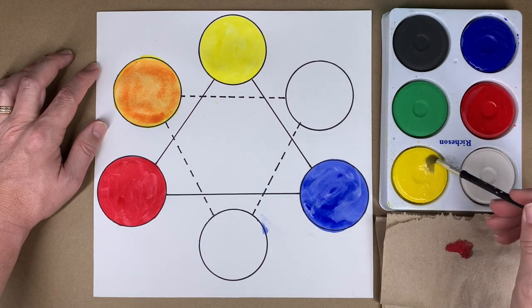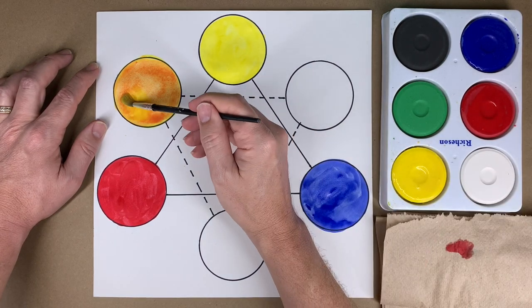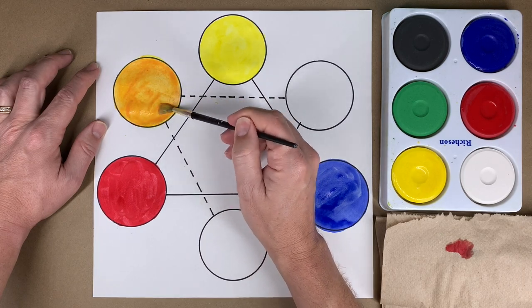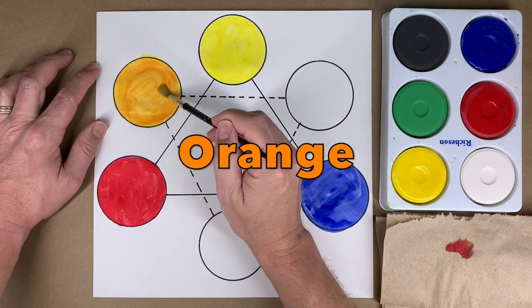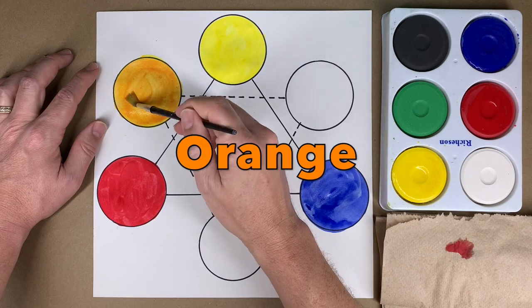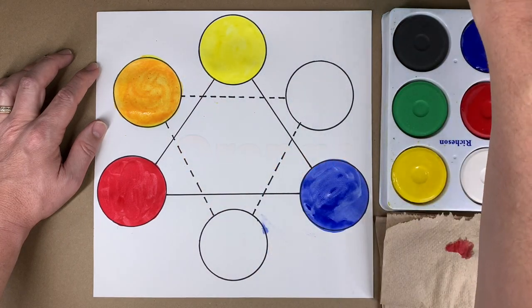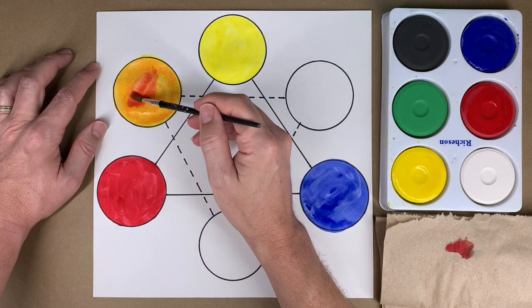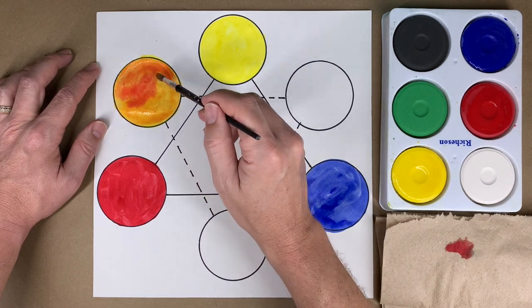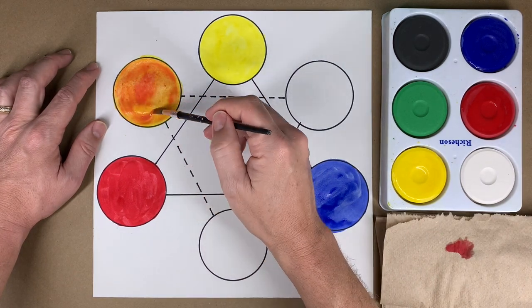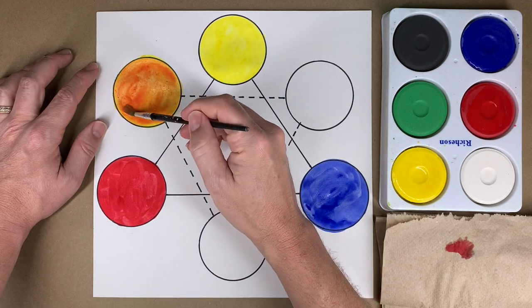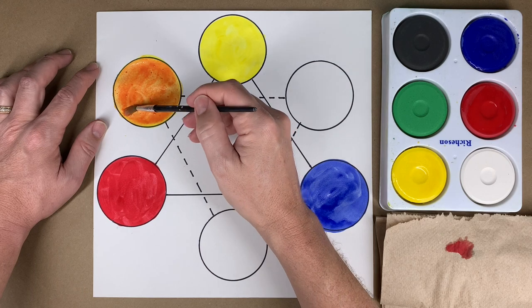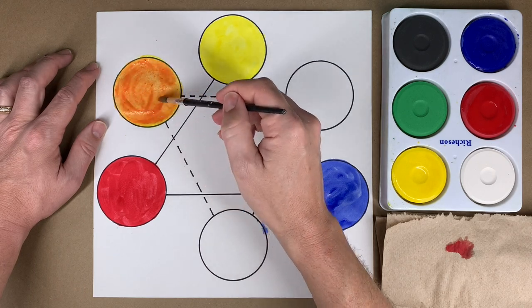A little more yellow. It's starting to make orange. A little bit more red. You kind of have to play around with it and add a little bit more of each color as needed. We made an orange.